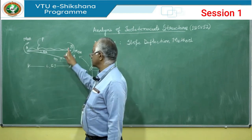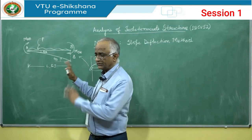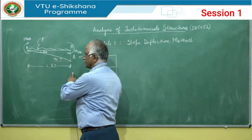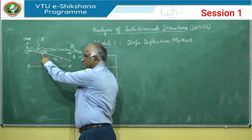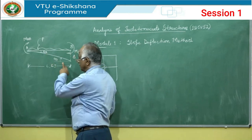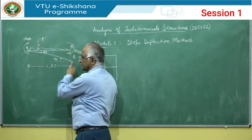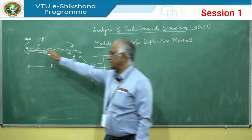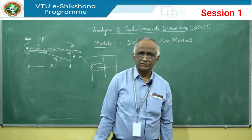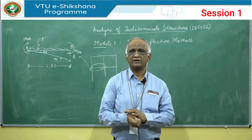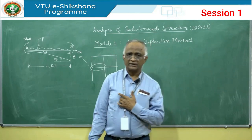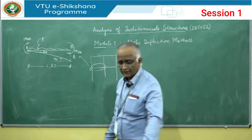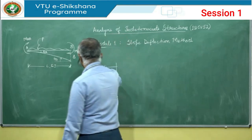Its deflected shape is shown here; support B sinks by an amount. For this structure, we have to derive the equation. The moment depends on the applied load, the slope at A, the slope at B, and the relative displacement of B with respect to A. Using the principle of superposition, we combine all these effects into one equation — called the slope deflection equation.